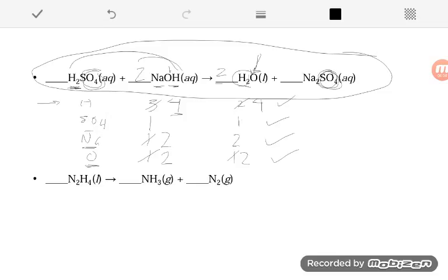Let's look at another example. This one only has two elements, nitrogen and hydrogen. So I'm going to do the same thing. I'm going to make my list. In this case, on the left side, I have two nitrogens and four hydrogens. And on the right side, I have one plus two gives me three nitrogens and three hydrogens.